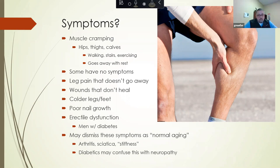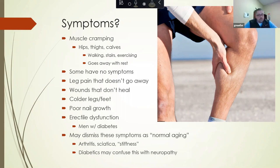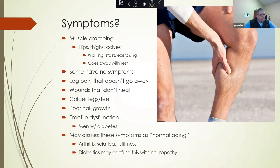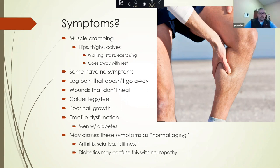You may often get leg pain that simply does not go away, or ulcers and wounds that do not heal. Temperature changes in your legs and feet may feel colder. You may have poor nail growth or discolored, yellowing nails. Specifically in men with diabetes, erectile dysfunction may be the initial manifestation of peripheral arterial disease. Some may dismiss these symptoms as just a part of normal aging, blaming arthritis, sciatica, nerve pain, or general stiffness. Diabetics may also confuse this with neuropathy.